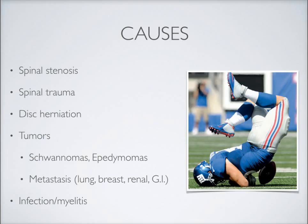Spinal stenosis, usually an age-related narrowing of the spinal canal. Physical trauma to the spine. Disc herniations protruding into these regions of the spinal cord. Tumors primary to the central nervous system — the two most common being schwannomas or ependymomas — or metastasis from cancerous tissues elsewhere spreading to the CNS. In descending order, lung cancer, breast cancer, renal cancer, and colorectal cancer tend to metastasize and produce conus medullaris syndrome or cauda equina syndrome.